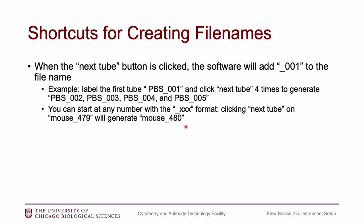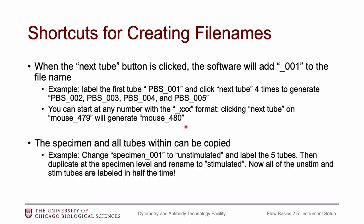The second trick has to do with groups. If you have two sets of samples where the tubes are labeled exactly the same but one set is unstimulated and the other is stimulated, use the specimen as a group. Change the specimen name to unstimulated, create all the tubes within that group, label all five tubes, then right-click on the unstimulated specimen and duplicate it. Change the duplicate's specimen name to stimulated. Now you have two groups with the same tube labels without typing everything twice.